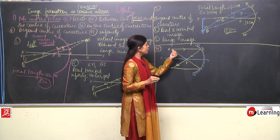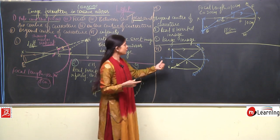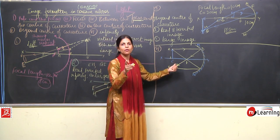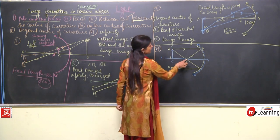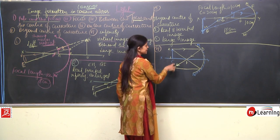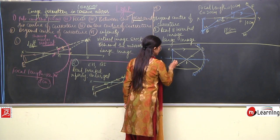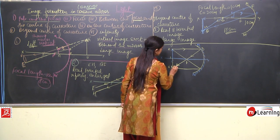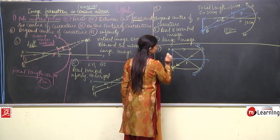So this reflected ray can be written as E — we get one point. For the second ray, we would normally pass it through the center of curvature, but this time the object is kept at the center of curvature, so the ray cannot pass to the center of curvature. Instead, the second ray passes through the focus and becomes parallel to the principal axis after reflection. Drawing the perpendicular gives us the image — A dash B dash.